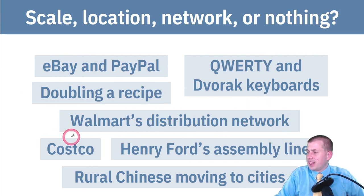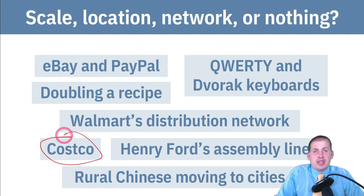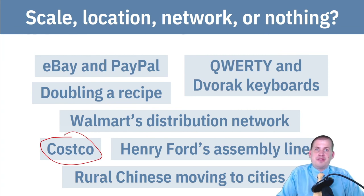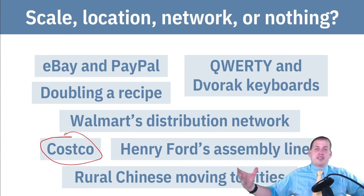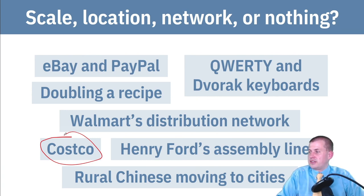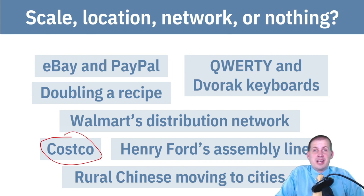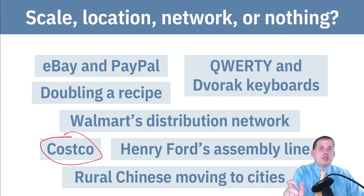Costco is an example of economies of scale. It's cheaper to buy lots of big things at Costco. If you go to Kroger and buy 50 pounds of flour, you'd have to buy around 50 individual bags, which are more expensive per pound than just buying one giant 50-pound bag at Costco. That's the whole reason Costco exists and why wholesale restaurant suppliers exist — they sell large quantities of things for cheaper than buying a whole bunch of individual small items.